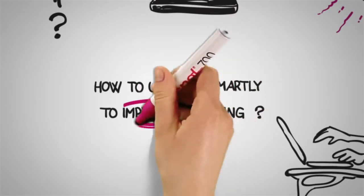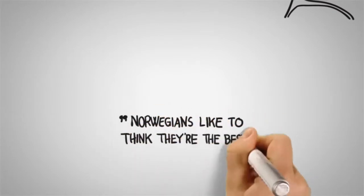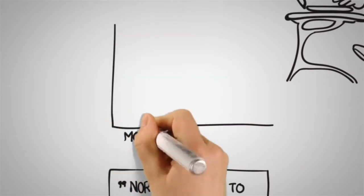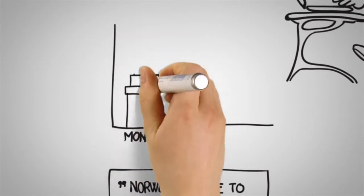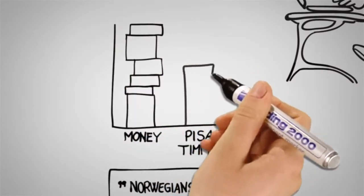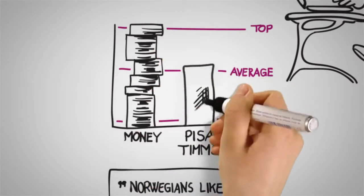But why is better learning important? Well, Norwegians like to think they are the best. However, the truth is that even though Norway spends more money on schools than most countries, Norwegian students score average on international PISA and TIMSS tests. Why is it like that? And what are the consequences?